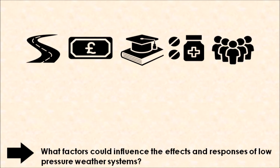We also have to factor in population density — the number of people who live in an area. If we have a dense population, there is a higher potential risk of injuries and fatalities because there is a high number of people in the path of these low pressure weather systems. Whereas if we have a low population density, we have a reduced risk of injury because fewer people are in the area.